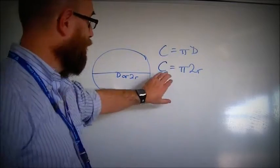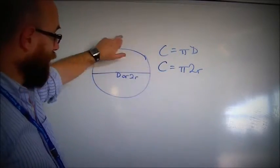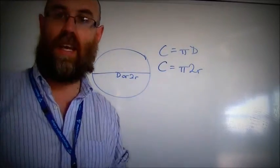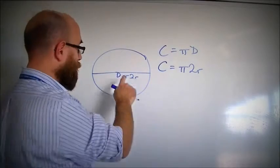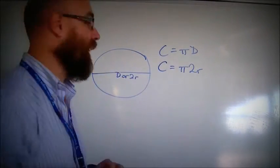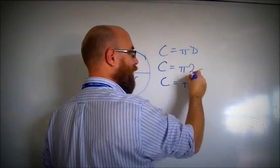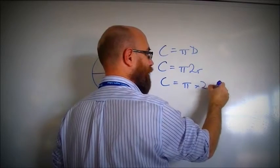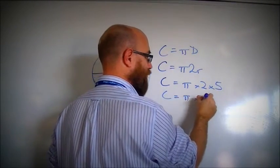Let's say, for example, I'm working out the circumference around this circle here, and I know that radius is 5. From the middle to the outside is 5 metres. So circumference equals pi times 2 times 5. Circumference equals pi times 10.